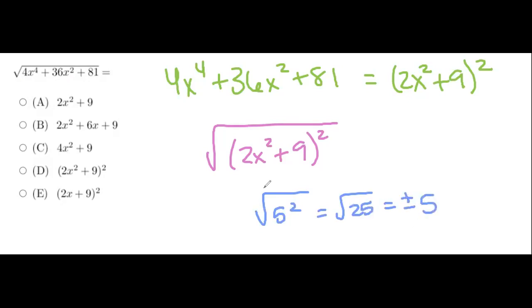So you see how basically they're just canceling each other out, they're inverse operations. So here, because of that, the square root and the square is going to cancel out. And we are going to be left with 2x squared plus 9 as our final answer.